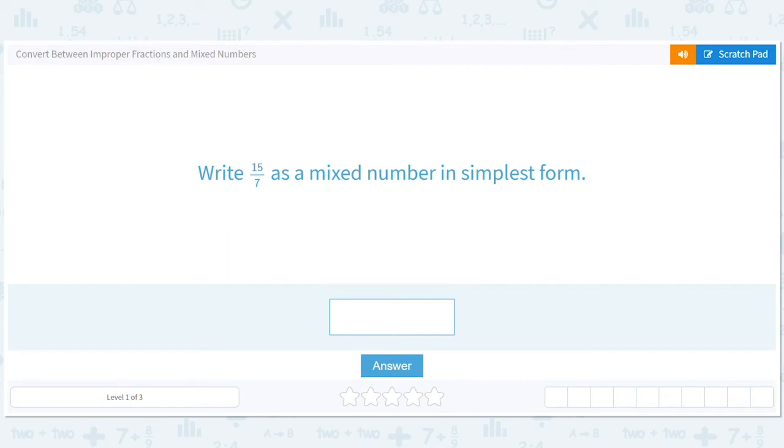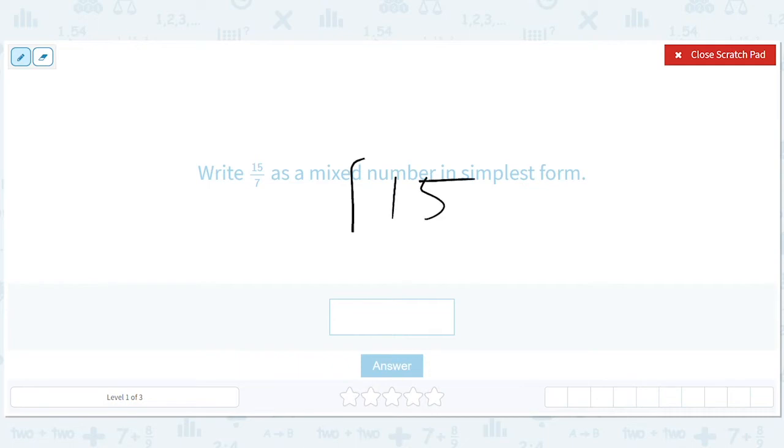Convert between improper fractions and mixed numbers. Okay, let's do it. So we're breaking things down into seven parts. So 15 divided by 7.